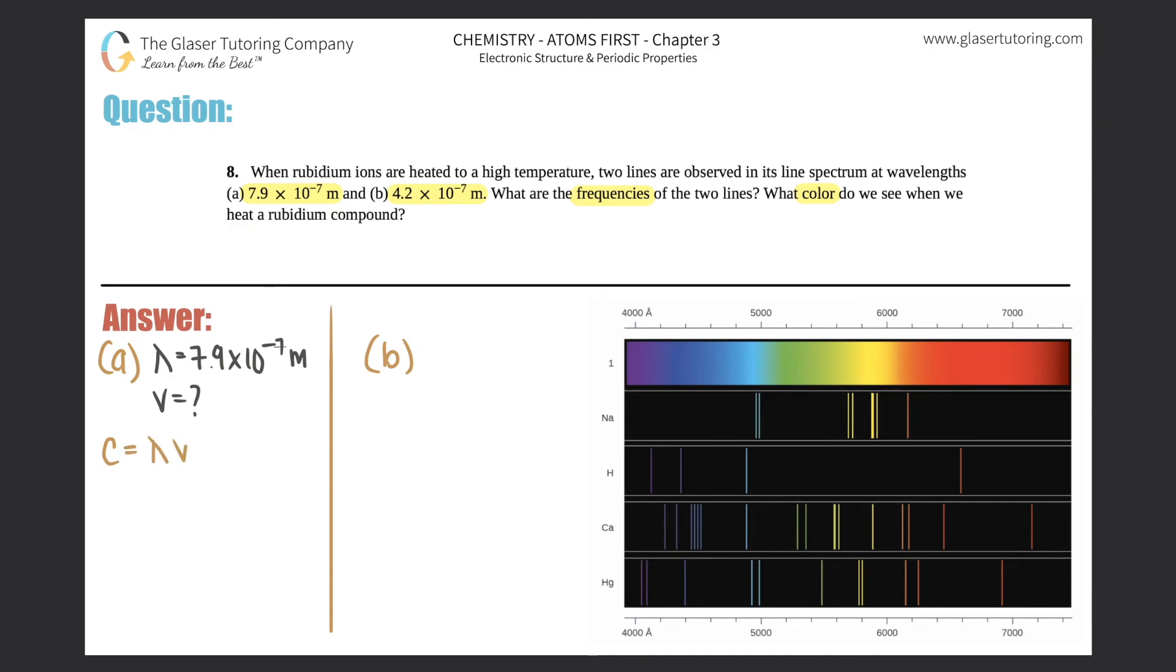Let's plug it in. We know that c is 2.998 × 10^8 meters per second. So: 2.998 × 10^8 = wavelength, which is 7.9 × 10^-7 times ν.